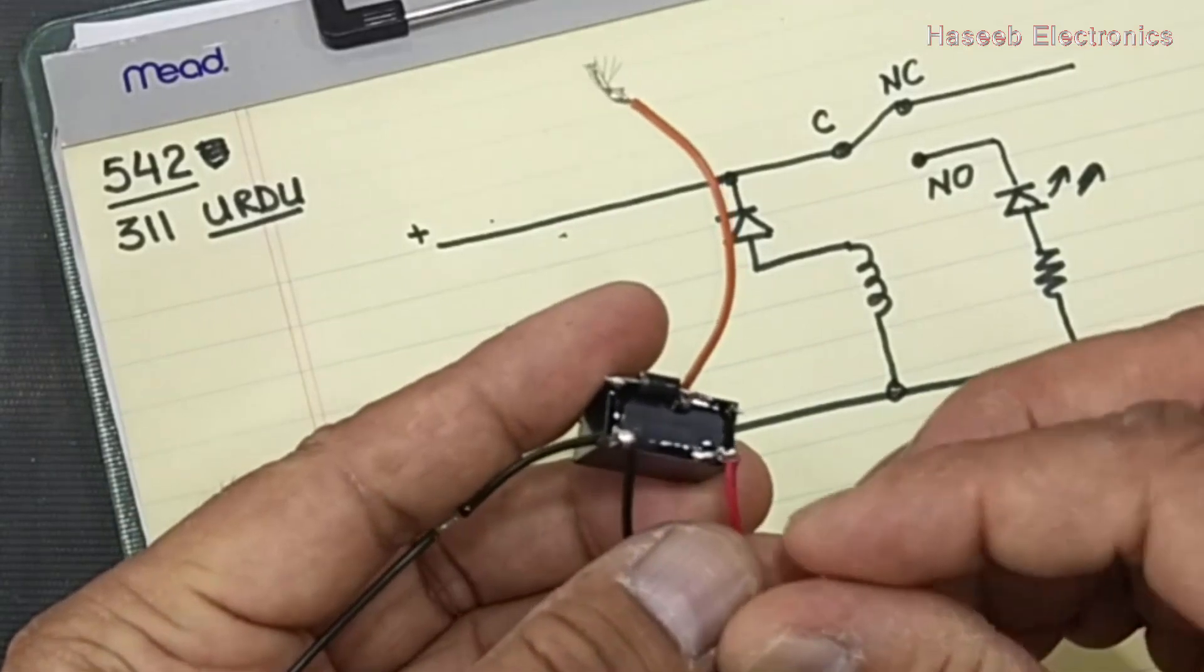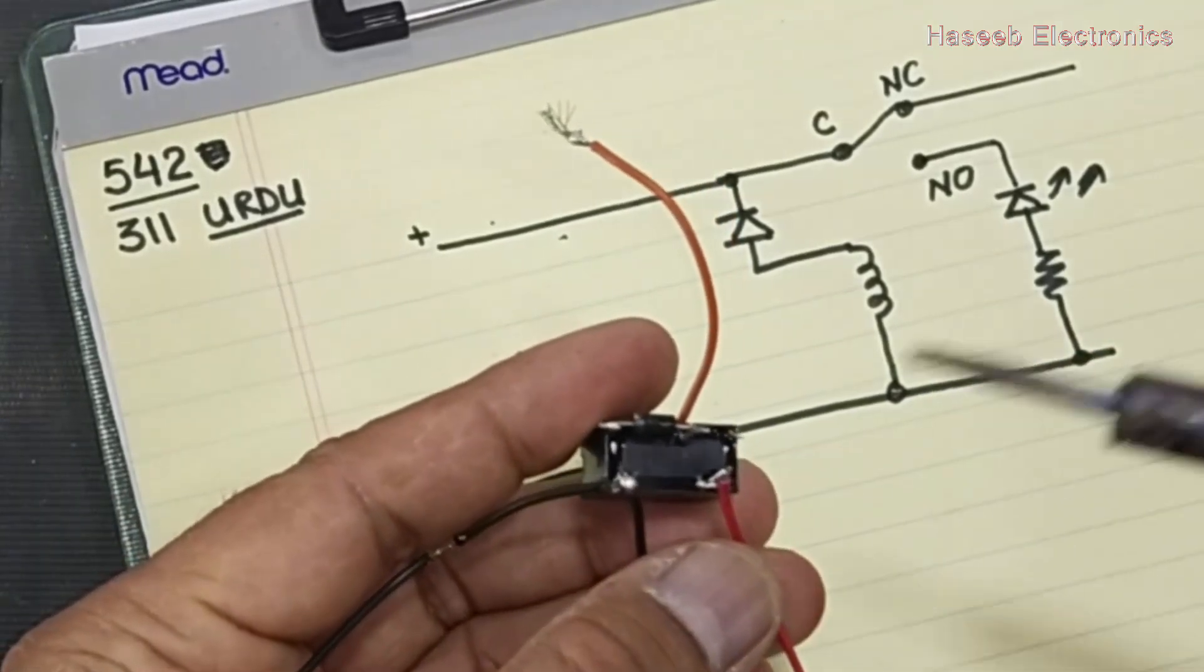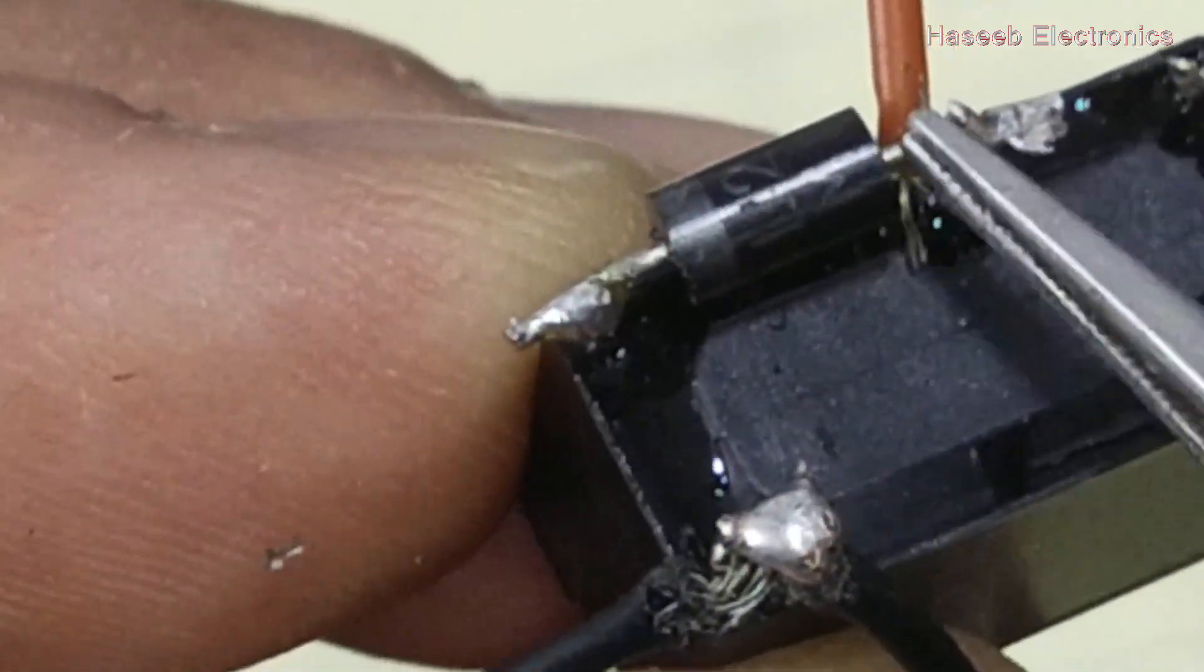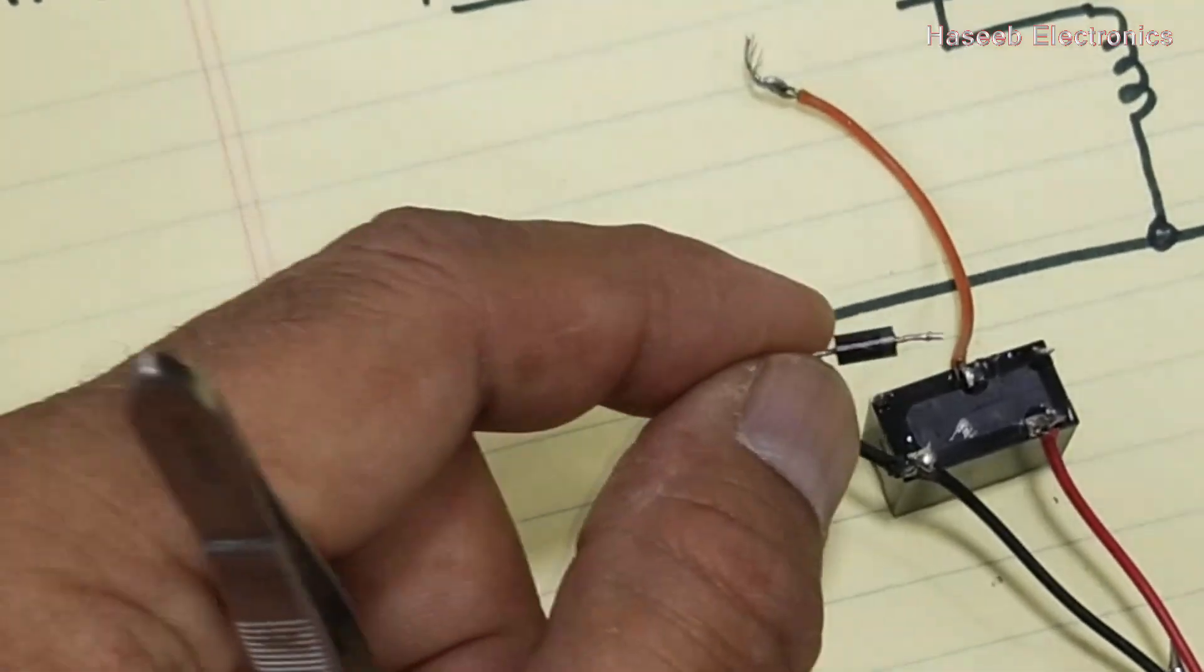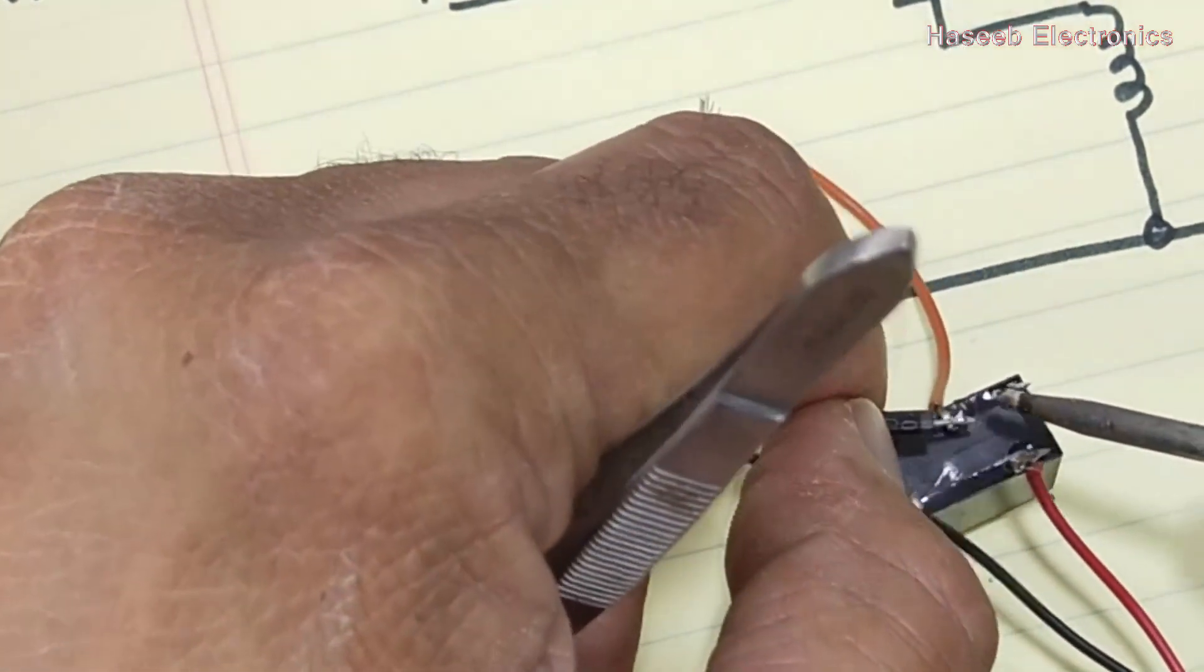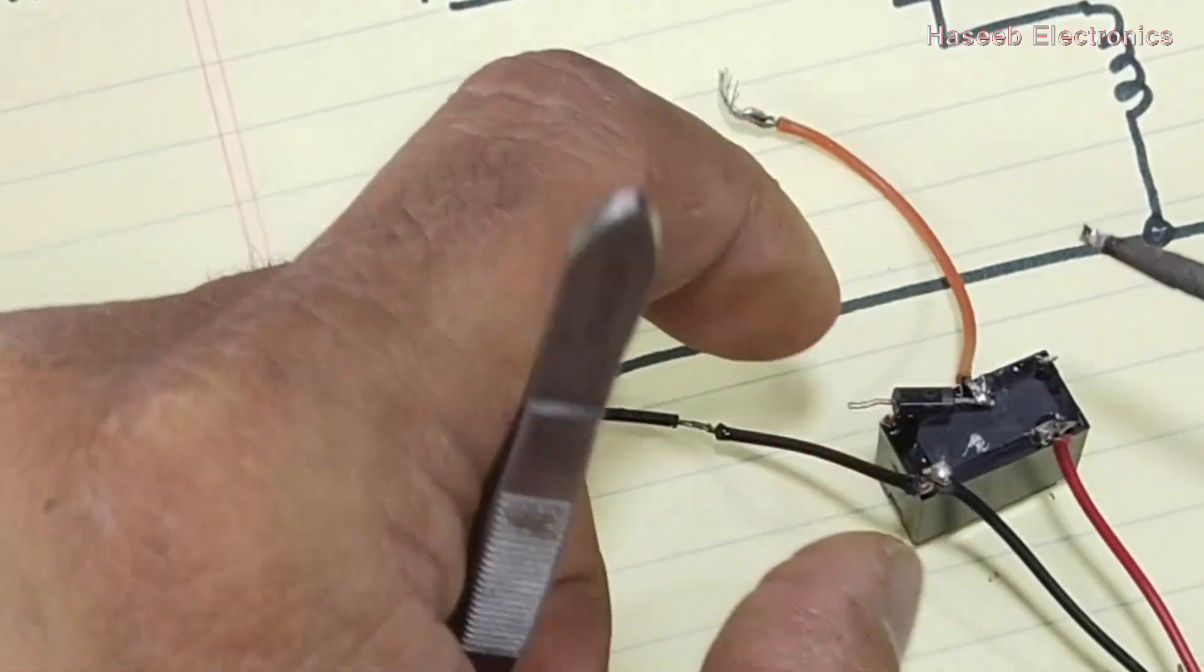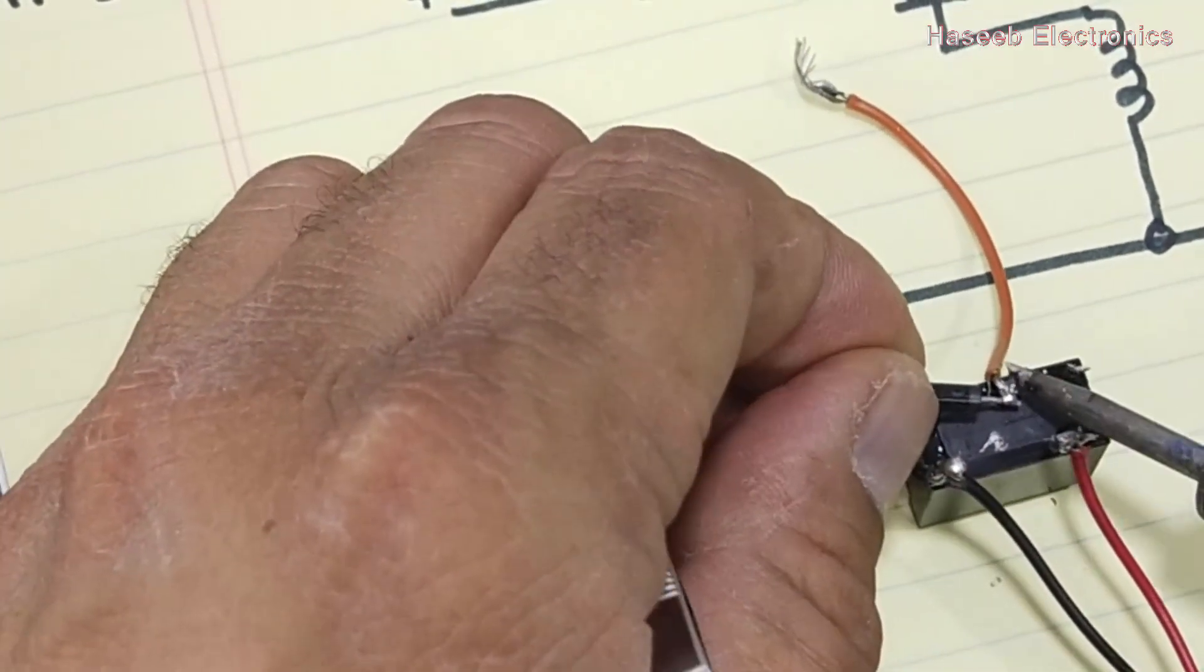Now we will reverse this diode. Cathode will be connected to the positive terminal. We will connect the cathode to the positive point, and the second end, anode of the diode, we will connect to the winding.